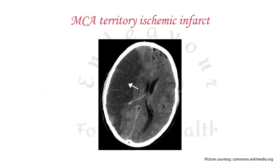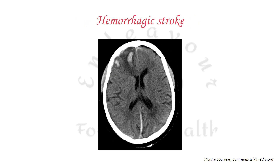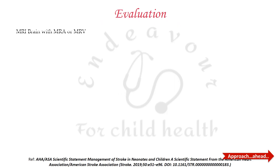Here is a diagram showing the MCA territory ischemic infarct. An ischemic infarct appears as a hypointense lesion in the region of a vascular territory, along with some edema. On the other hand, hemorrhagic stroke appears as a hyperintense, circumscribed, space-occupying lesion. This is how you differentiate ischemia and infarction from hemorrhage on CT scan.